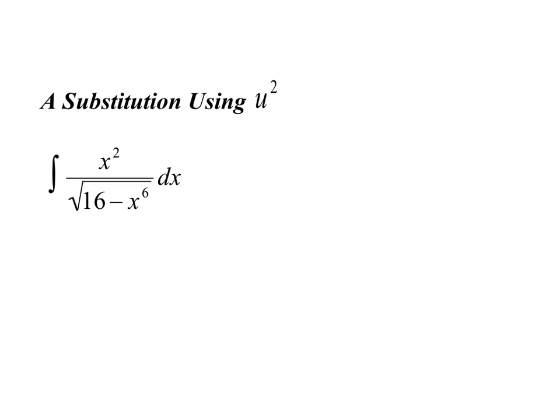We're making a substitution using u squared instead of u. So we want to think about how that would play out — it's actually easier than you might think, because really all you're doing is taking what you would normally define as u and defining it as u squared instead. So let's go with our instincts and say that u squared is equal to 16 minus x to the sixth.